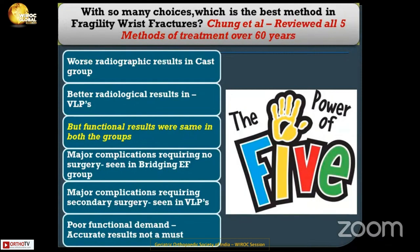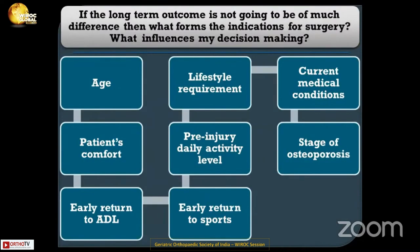Reviewing literature — Chung et al. reviewed all five methods of treatment over 60 years. What does this five-method review say? Worst radiographic results were in the cast group, better radiological results with volar locking plates, but importantly, functional results were the same in both groups after one year. Major complications requiring secondary surgery were seen in the VLP group, and major complications requiring no surgery were seen in the bridging external fixator group. Poor functional demand makes an accurate radiographic result not a must.